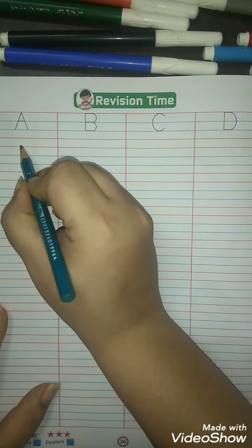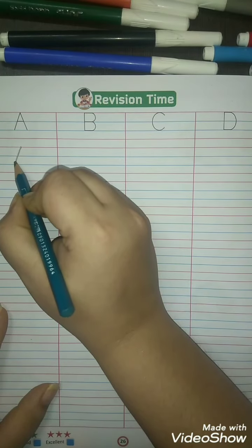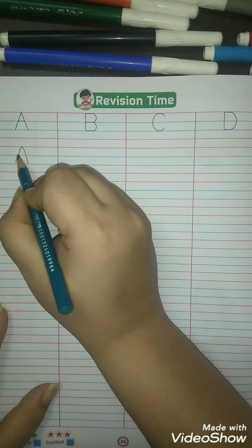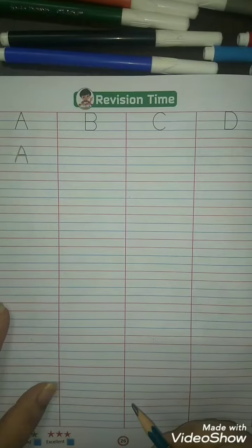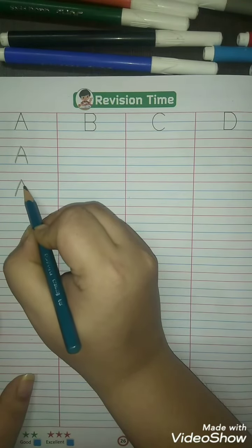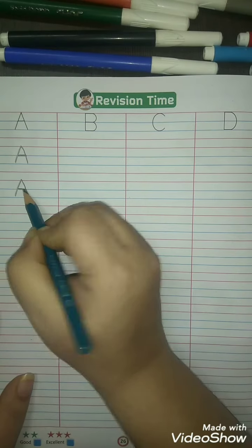First you will make a slanting line, make another slanting line, and a sleeping line. A, A for apple. Slanting line, make another slanting line, and sleeping line. A for apple.